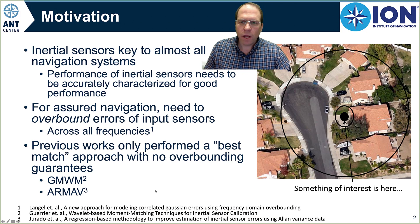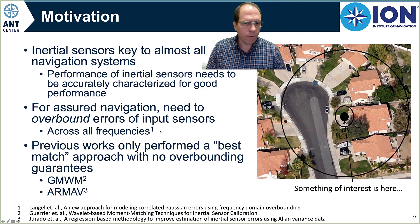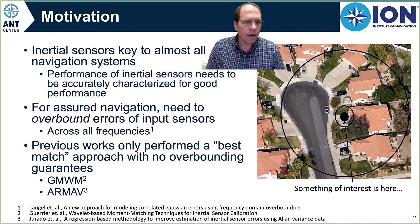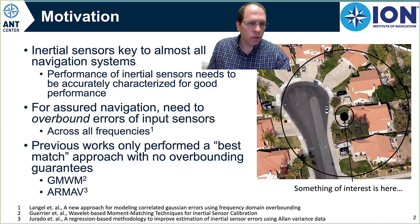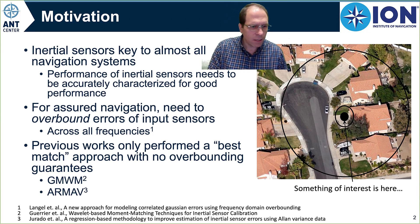What those papers do not address, though, is how do I overbound the performance? If I want to have assured navigation, so when my Kalman filter generates a fused result, I want its covariance to be at least as large or possibly larger than the true error inside of my system, then I need to overbound those errors across all frequencies — in the frequency domain, it needs to overbound all of those. So we look at how we can characterize inertial sensors but do it in such a way that we overbound the errors, as opposed to just trying to find the best fit. That's really the main contribution of this paper: moving from a best match approach to a best match with an overbounding constraint.